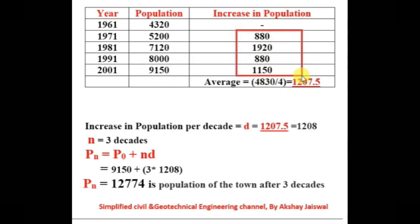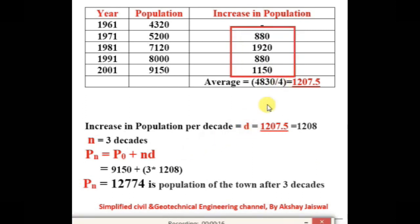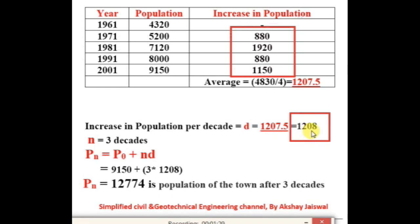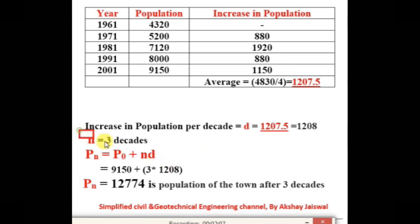Now we will take the average of these four values, which will be the value of d. Adding 880, 1920, 880, and 1150 and dividing by 4 — since there are four values — the total is 4830, and the average is 1207.5. So the average increase in population per decade d = 1207.5, approximately 1208. Since the question asks for population after 3 decades, the value of n is 3.